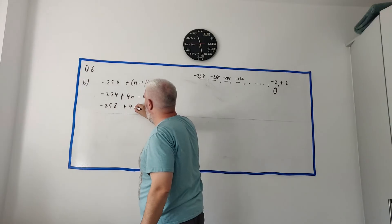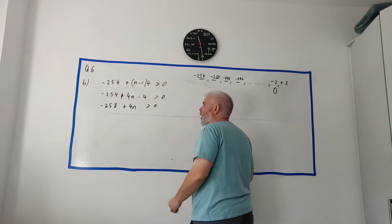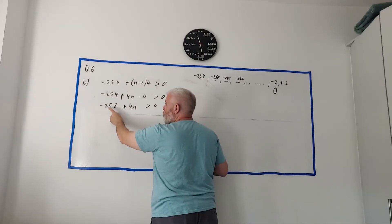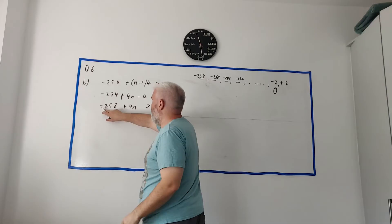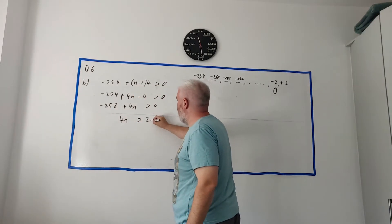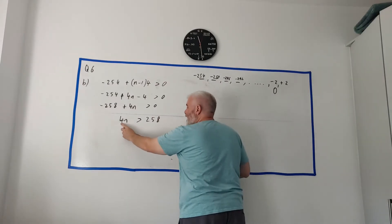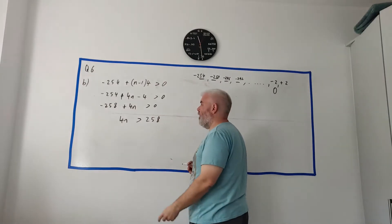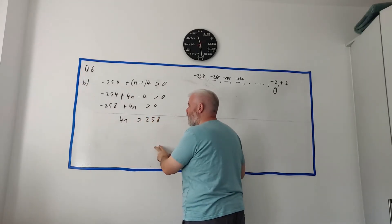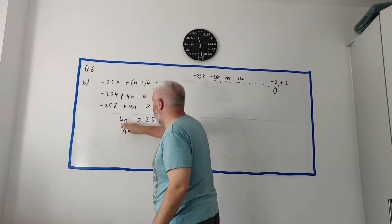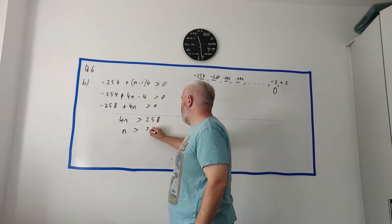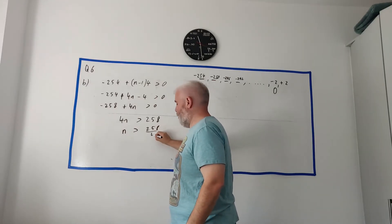Plus 4n is greater than 0. Let's get rid of this guy by adding plus 258 to both sides. That will disappear. Let's get rid of the n by dividing both sides by 4. If you divide by a minus number, something happens, but we're not here. So, we're dividing by plus 4. That will disappear. 4 divided by 4 is 1. So, 1n is greater than 258 divided by 4.